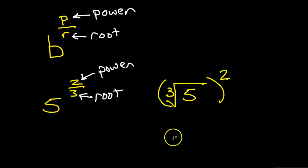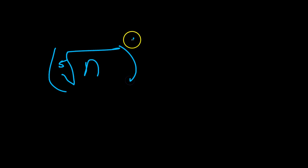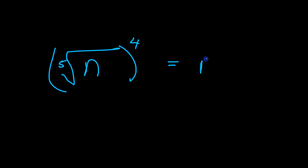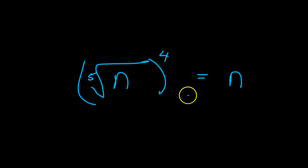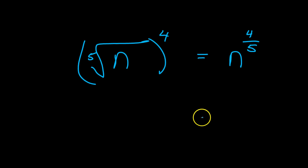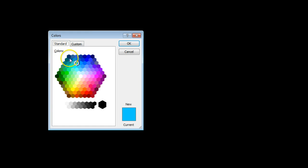We can also go the other way. If I give you the 5th root of n to the 4th power, if I want to rewrite this, obviously 4 is the power and 5 is the root. So in fractional form it goes power over root — I need to make my fraction 4/5.